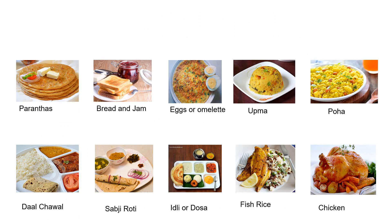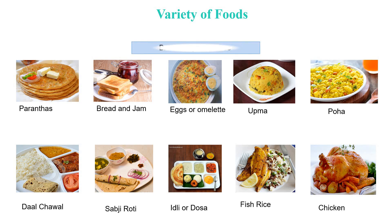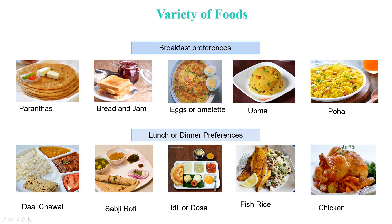To begin with, let's study about different varieties of food. We eat a variety of foods in our daily lives and our food preferences generally depend upon many factors. For example, it depends upon the time of the day — in breakfast we generally prefer to have parathas, bread jam, eggs or omelette, upma, poha, etc. Whereas for lunch or dinner we prefer dal chawal, sabzi roti, idli dosa, fish rice, chicken, etc. In the morning or evening we prefer to have tea with some snacks.